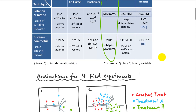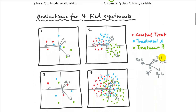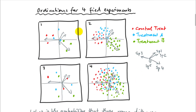Let's start with an example we are probably all familiar with by now. These are ordinations for four field experiments. Let's say it's a grazing experiment, so we have a control — grazing business as usual — and then we have two alternatives, treatment A and treatment B. We want to see what happens to our community of grasses as a function of these treatments.